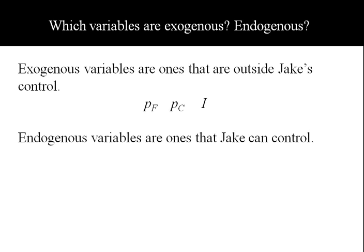So the endogenous variables are the ones that Jake can choose or can control. In this case that's the amount of food and the amount of clothing he buys.